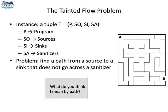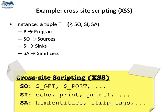To know if a program contains a vulnerability, we must try to find a path from the source of tainted information to a sink that does not go through a sanitizer. If this path exists, then we say that the program contains a vulnerability.